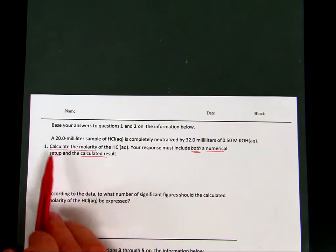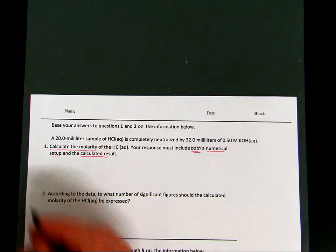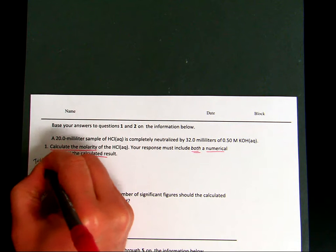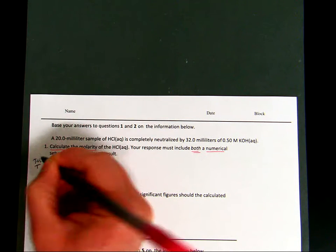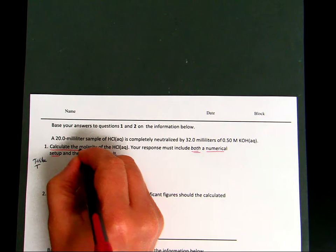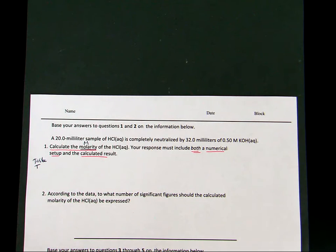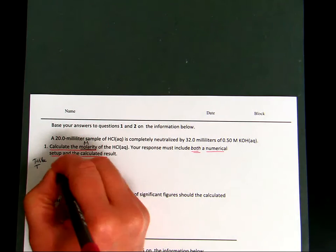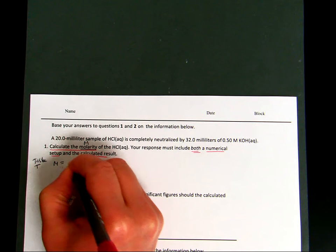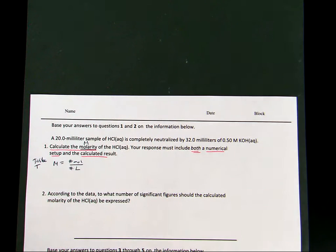First thing, when it asks you to calculate anything, I'm going to typically say right away, turn to your Table T that has all of the major mathematical relationships you need to be able to use. Find the mathematical relationships based on molarity with capital M. And if you look carefully, you'll see that it will show you molarity equals the number of moles divided by the number of liters.